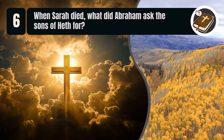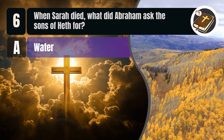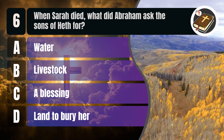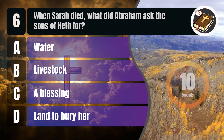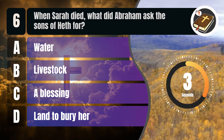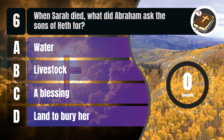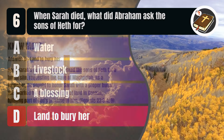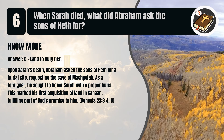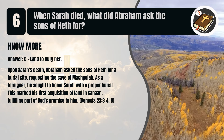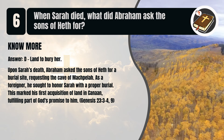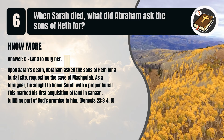When Sarah died, what did Abraham ask the sons of Heth for? Upon Sarah's death, Abraham asked the sons of Heth for a burial site, requesting the cave of Machpelah. As a foreigner, he sought to honor Sarah with a proper burial. This marked his first acquisition of land in Canaan, fulfilling part of God's promise to him. Genesis chapter 23 verses 3 to 4, verse 9.